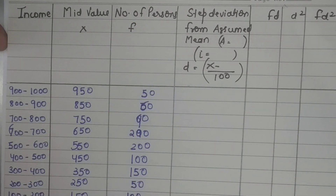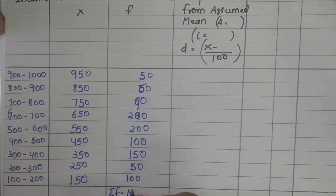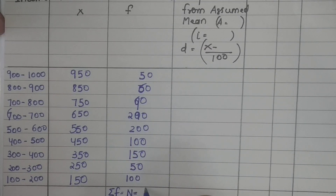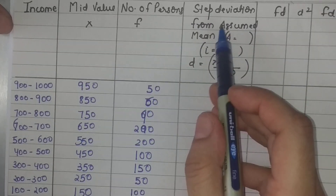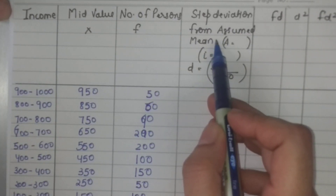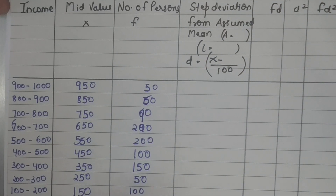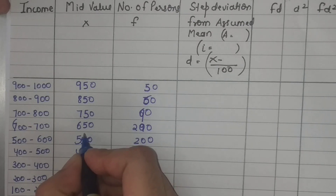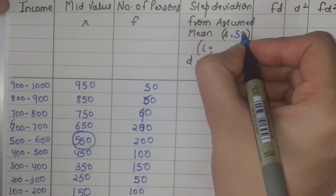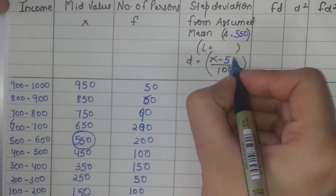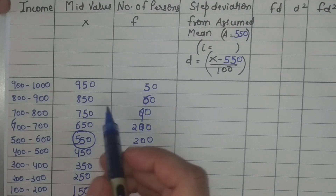Sigma f equals n, so sigma f = 1000 persons. Next, I find the step deviations from the assumed mean. I prefer the assumed mean to be near the center of the data, so I choose assumed mean A = 550. The deviation is x minus 550, and since all differences have 100 as a common factor, I divide by i = 100.